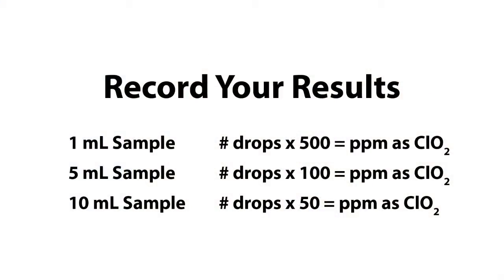Multiply the number of drops by your chosen equivalency factor to determine the parts per million chlorine dioxide.